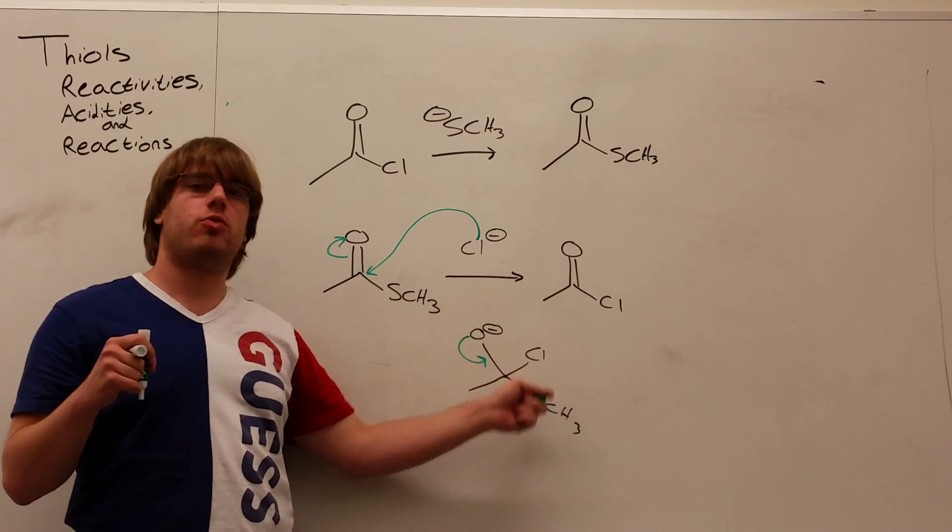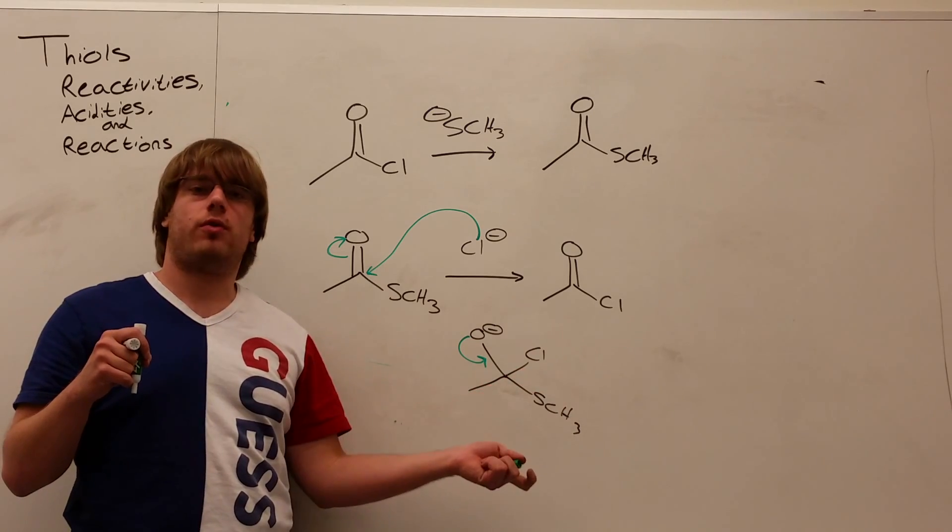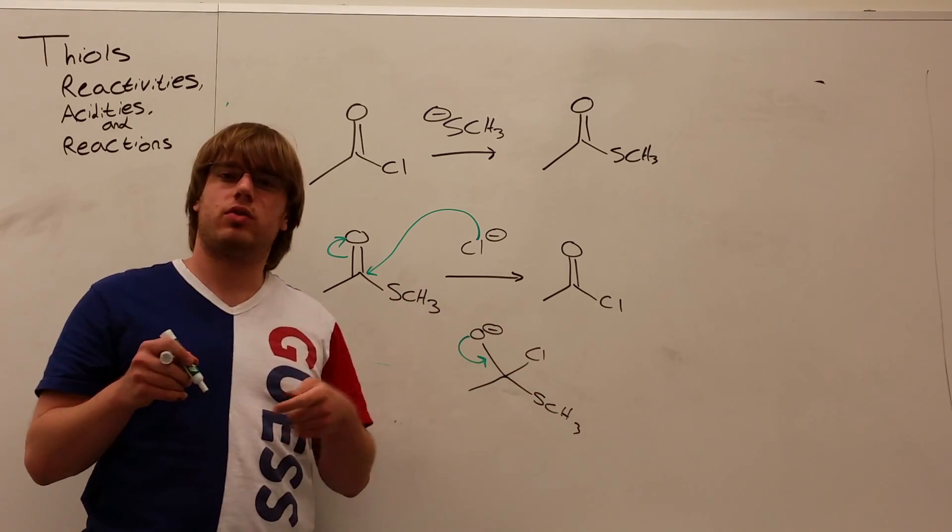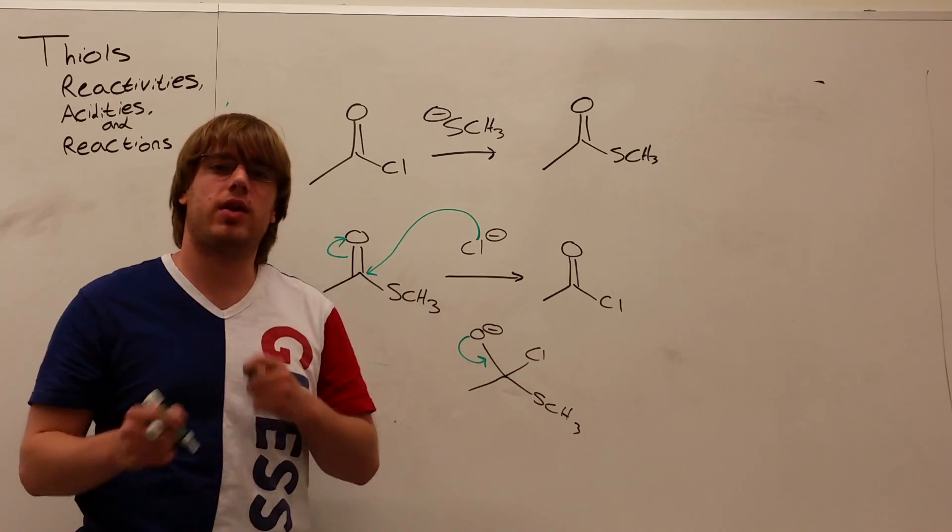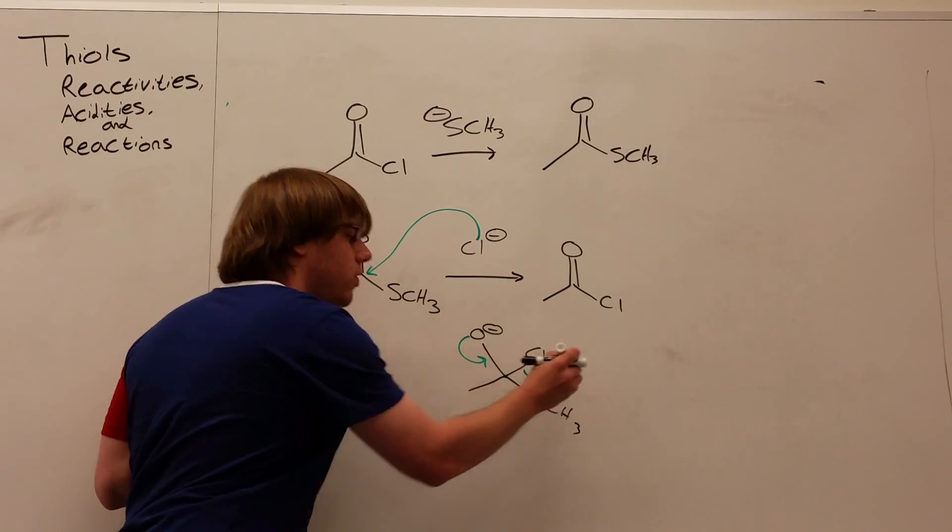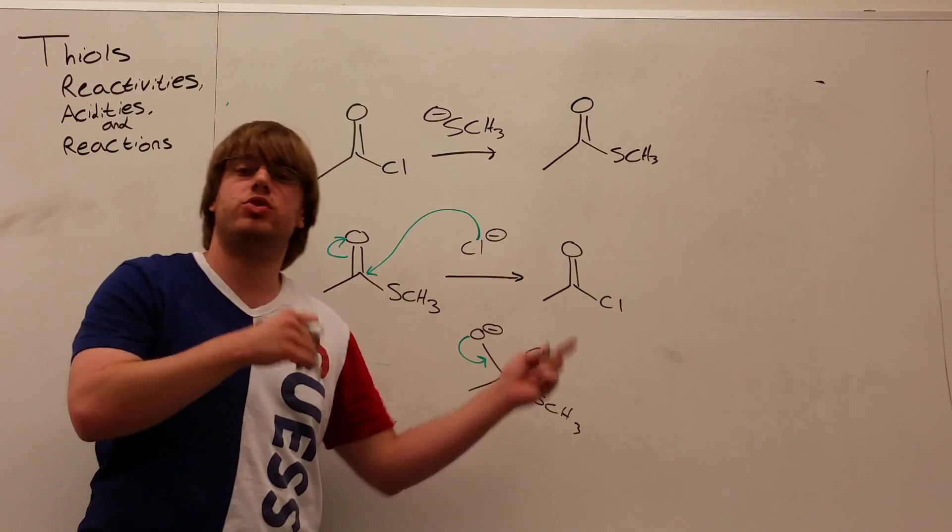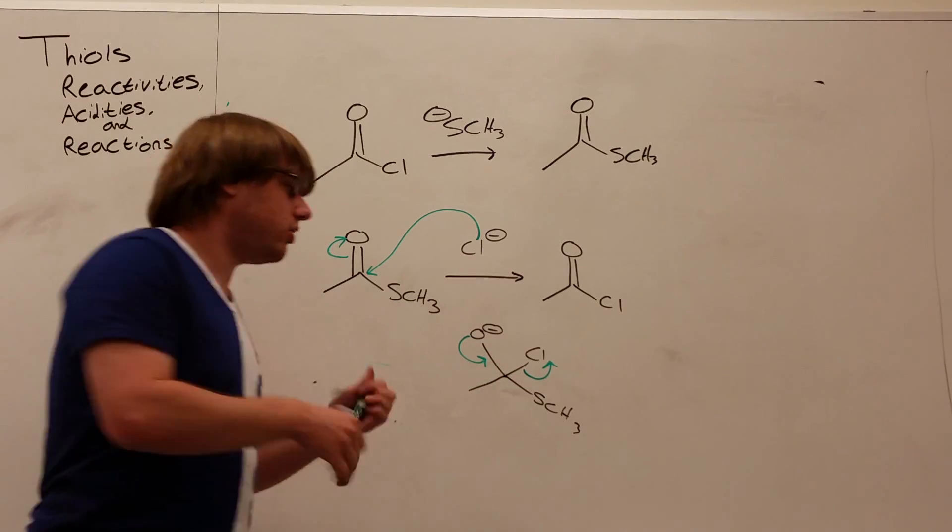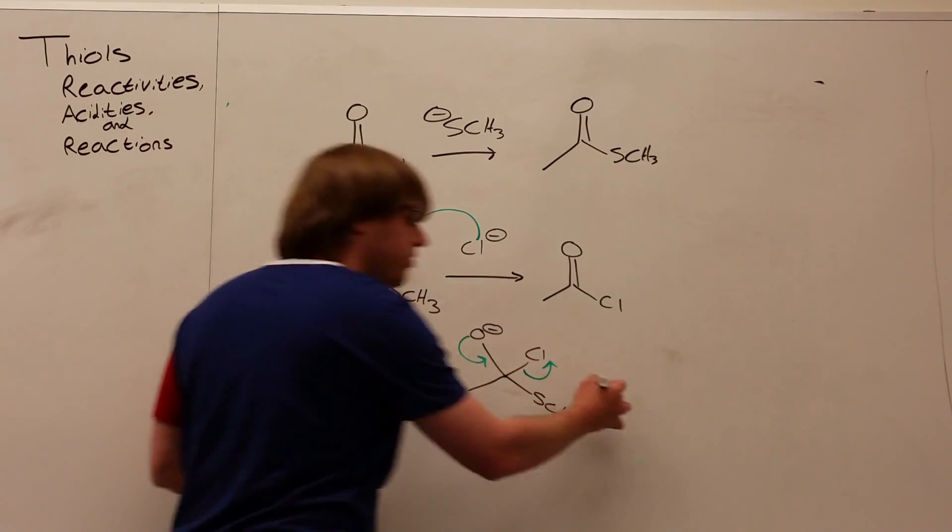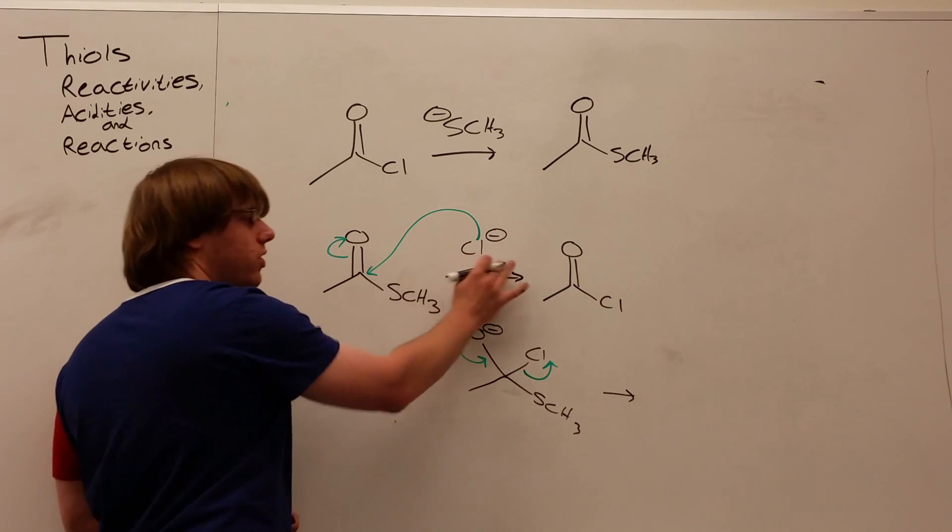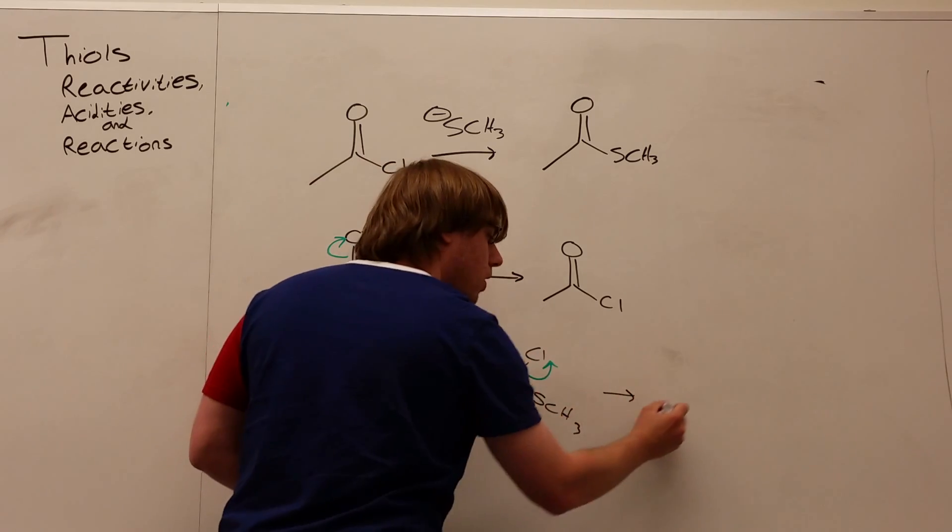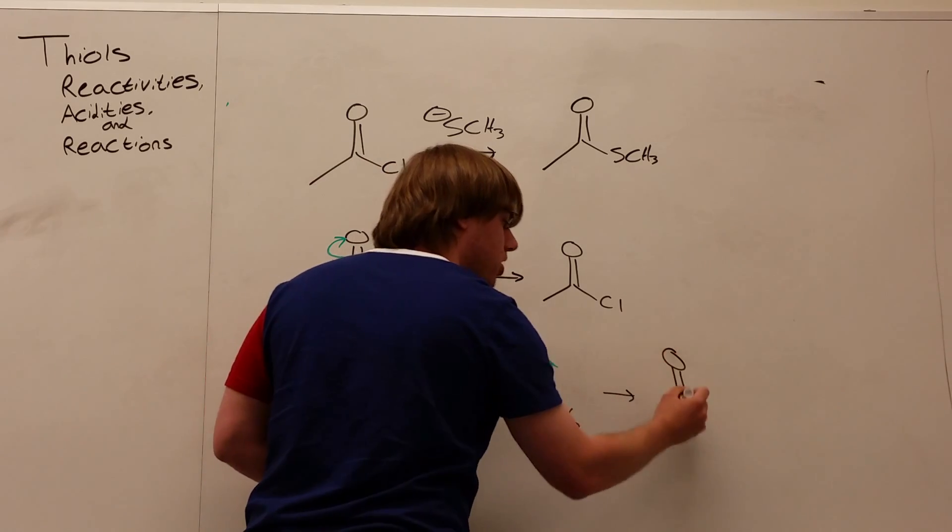Chlorine is. Chlorine minus is much more stable than SCH3 minus. And so, even though it was the chlorine that came in, it's still the better leaving group in this intermediate, so it will just pop right off. And you'll end up going back to what you started with. The final product of this reaction, where you have Cl minus over the arrow, would just be your starting reactant.